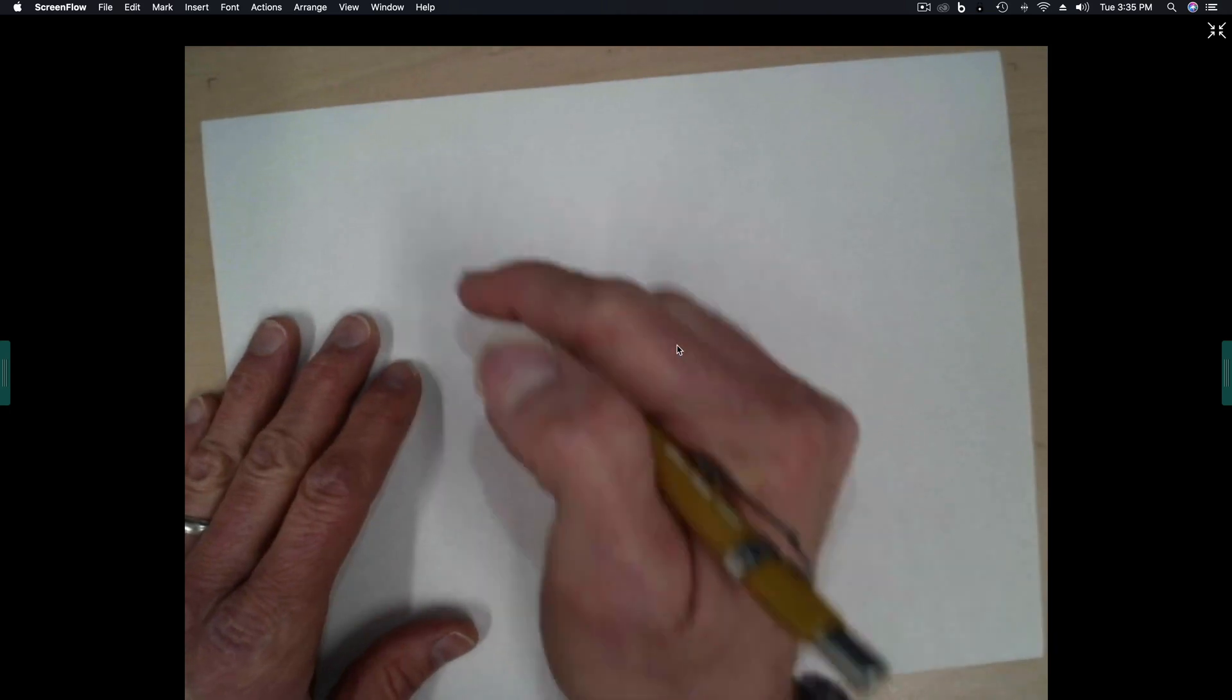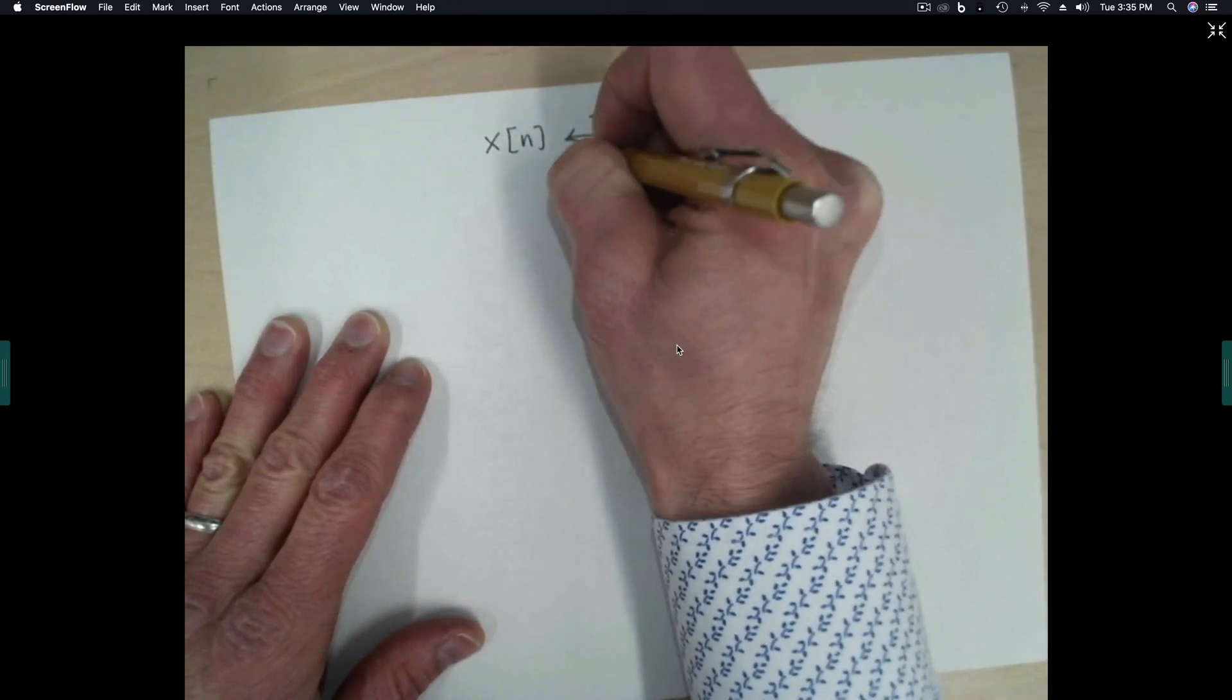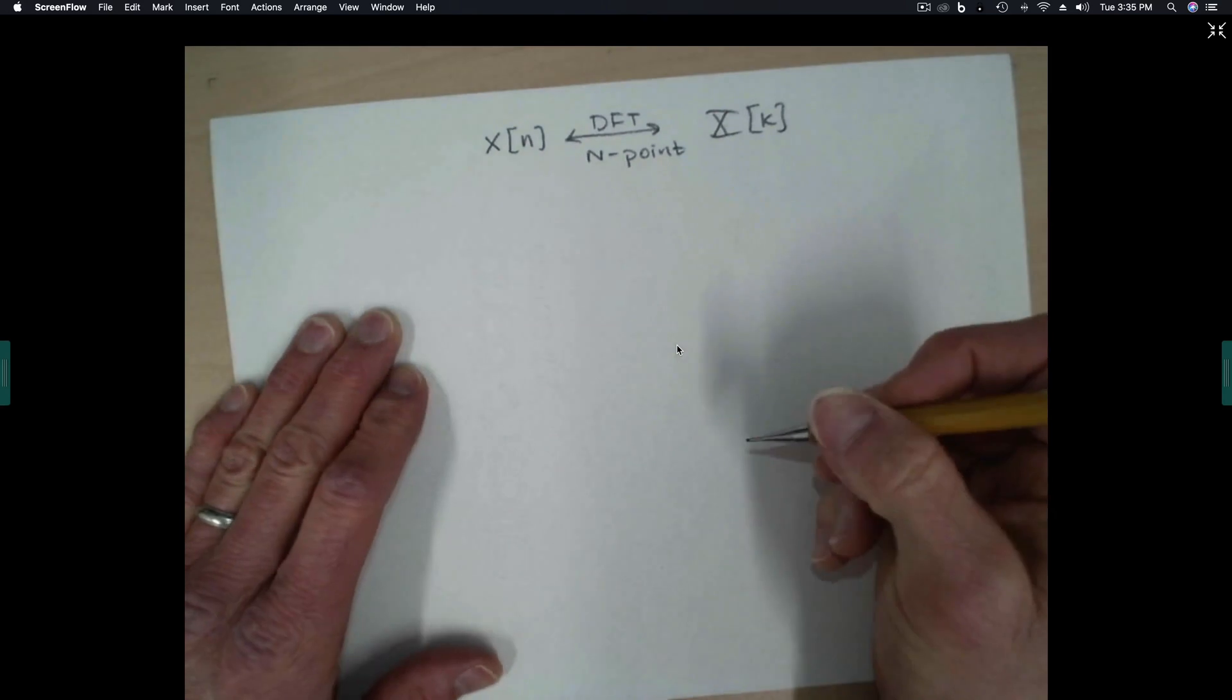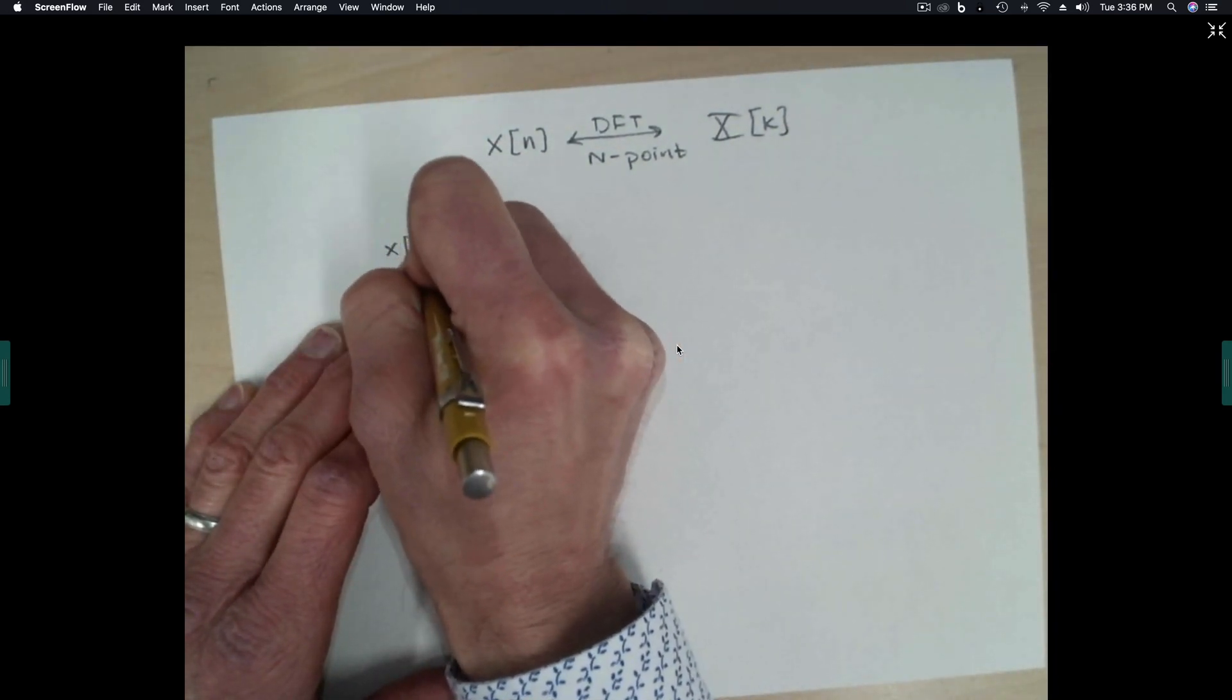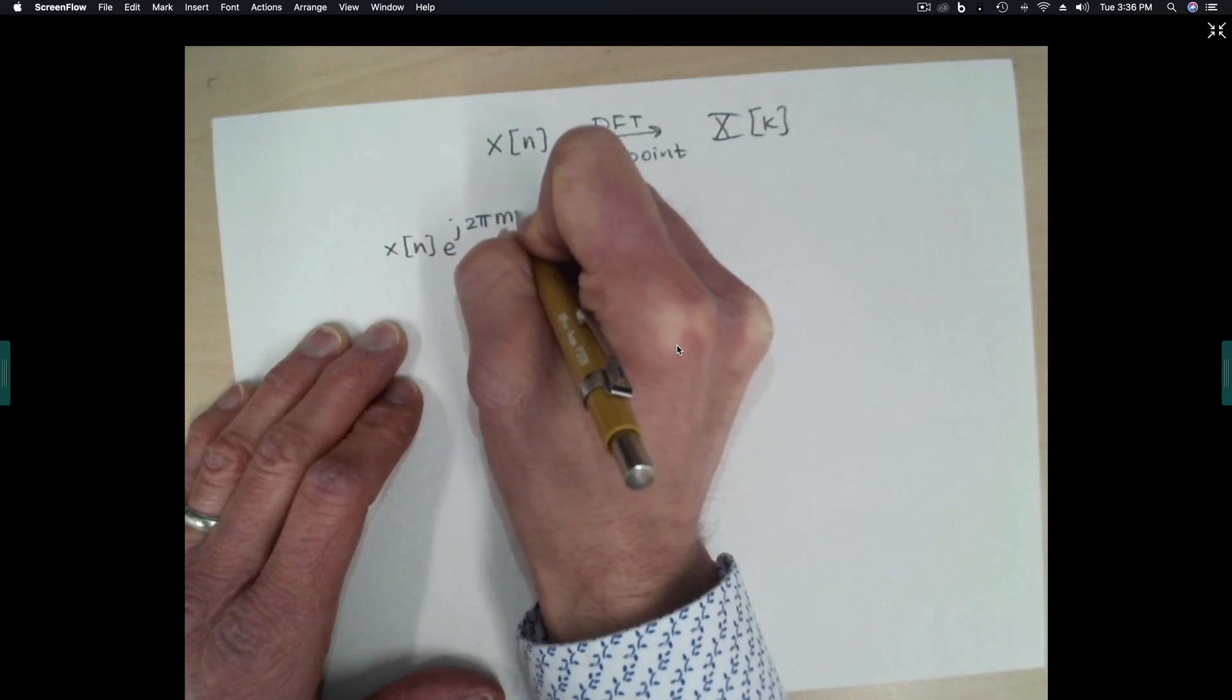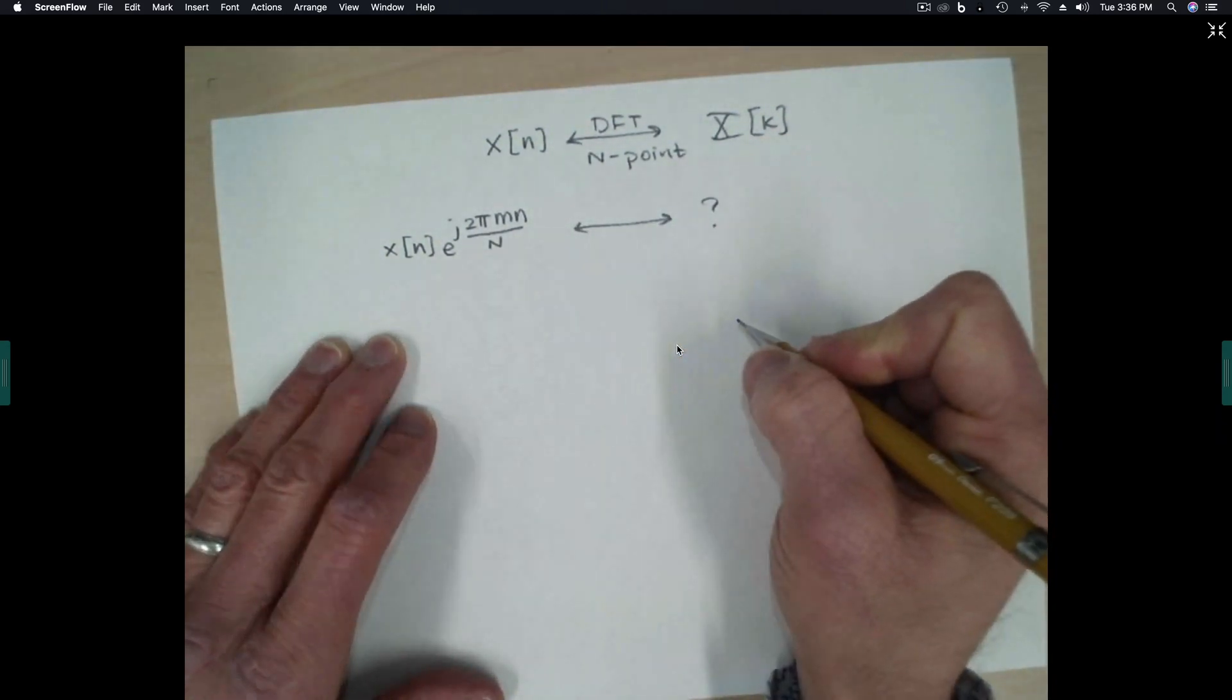So let us suppose in this example that x of n has a transform, a DFT, and it's an N point DFT, x of k. And what I'd like to do is multiply x of n in the time domain by e to the j 2 pi m n over capital N. And the question is, what is the transform of that sequence?